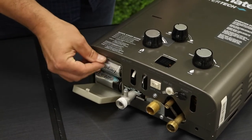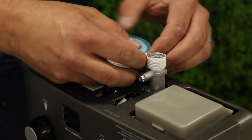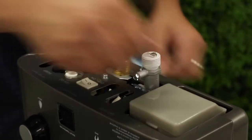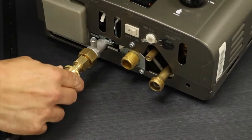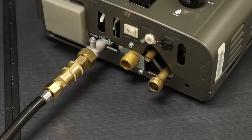Secondly, attach the quick connect gas fitting to the unit ensuring you wrap the gas inlet with the provided silicon tape. Once this is secured using a shifter you can then easily and quickly connect and disconnect the hose and regulator.